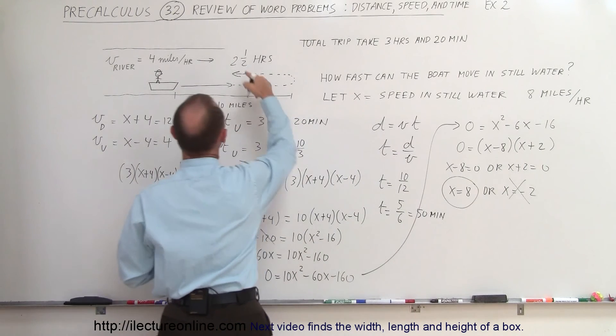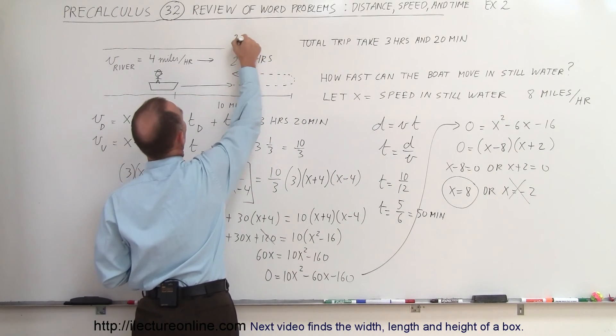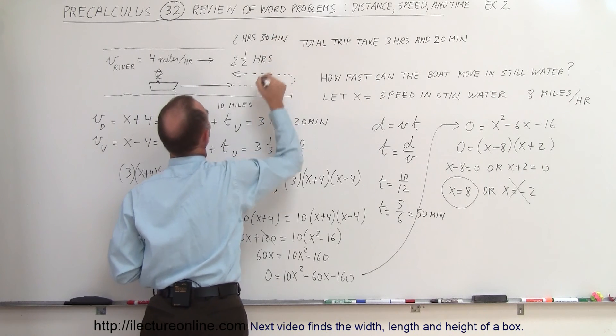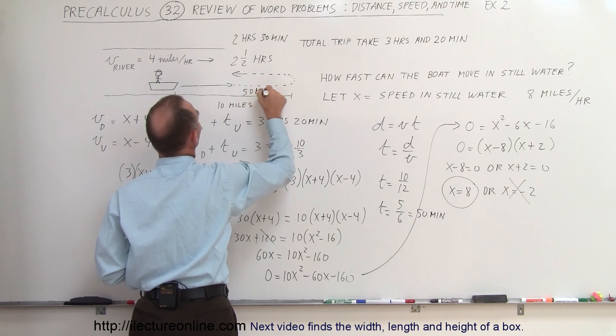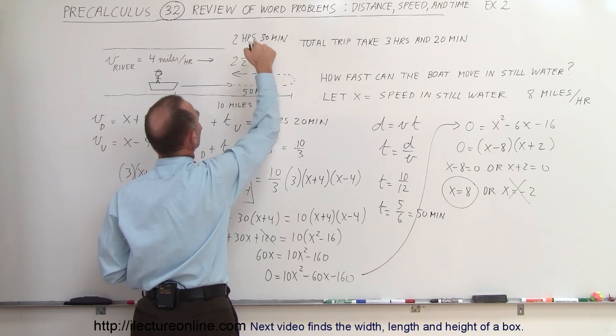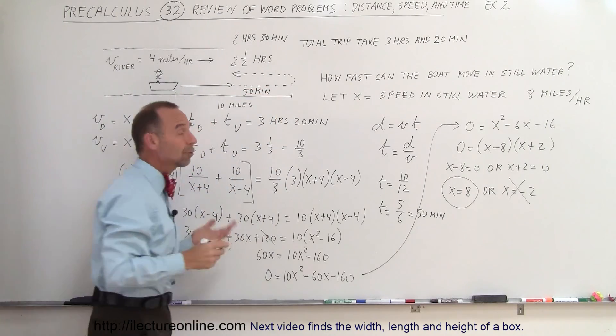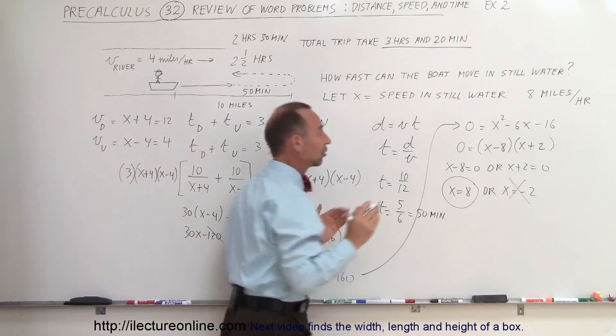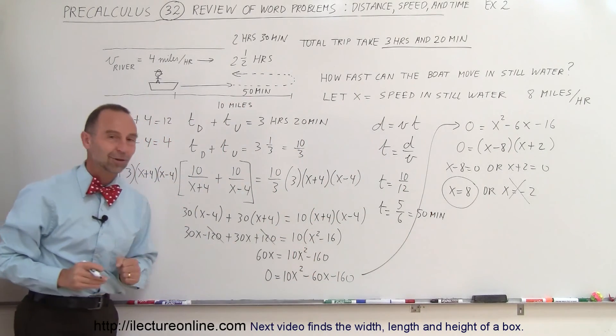So add 50 minutes to 2 and a half hours, which is 2 hours and 30 minutes, and this is 50 minutes going downstream. 2 hours and 30 minutes plus 50 minutes gives you 3 hours and 20 minutes, which is the amount of time given, so it looks like we did it correctly, and that is the correct answer.